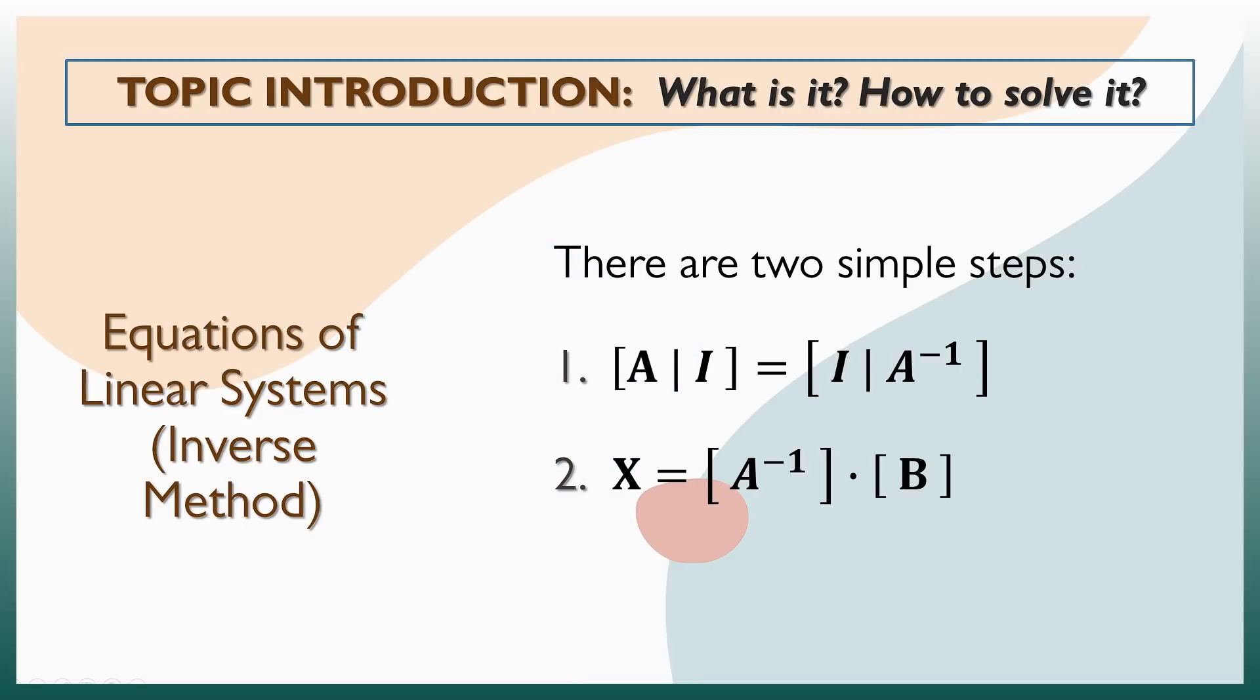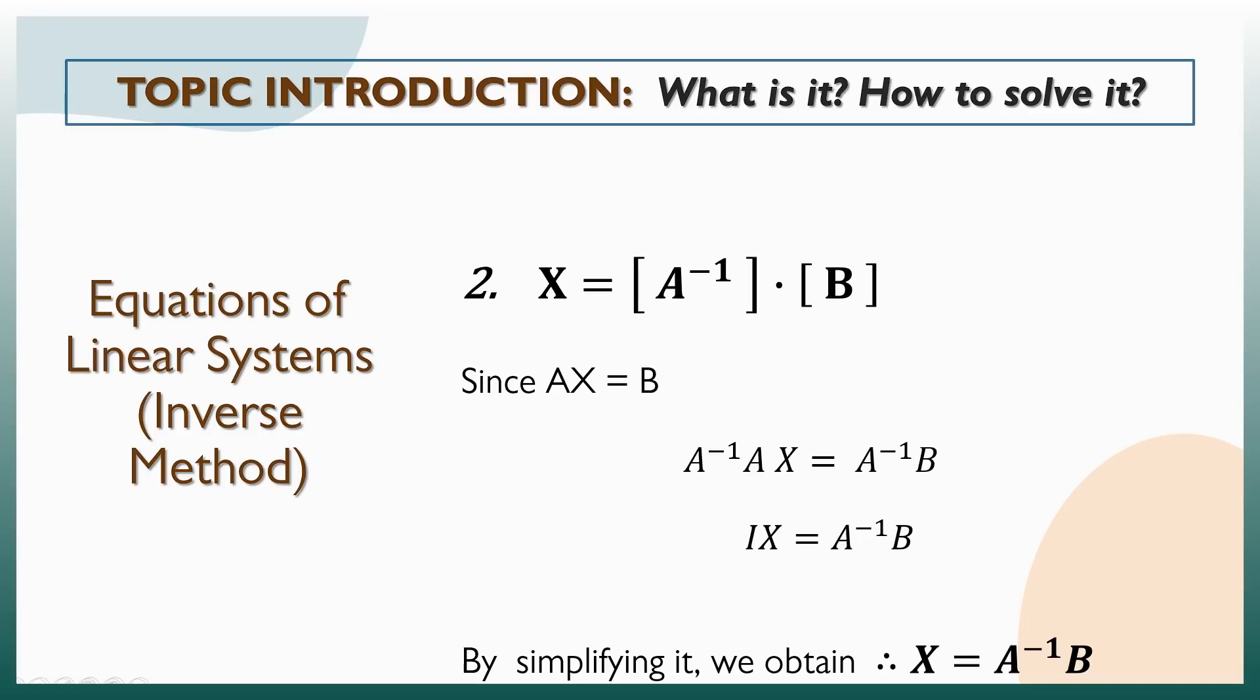But how did we arrive to this formula, X is equal to inverse of A times B? We have to look back on our original form, AX is equal to B. Multiplying both sides with the inverse of A, we get inverse of A times A times X equals inverse of A times B. We know that multiplying inverse of A with A will result in an identity matrix, so this becomes IX equals inverse of A times B. The identity matrix has the same principles as 1, so anything multiplied to it will result to the original value. Therefore, our final formula is X equals inverse of A times B.